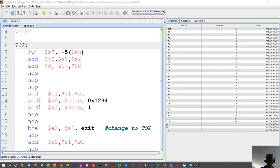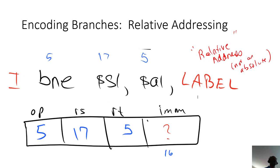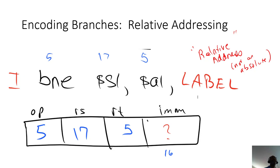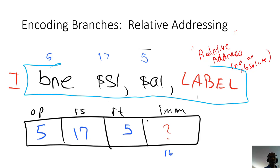In the previous discussion we had a chance to look at both an add and a load word instruction. Now I want to look at a branch instruction and see if we can learn how it's decoded. Let's assume that we have a branch instruction that looks like this.